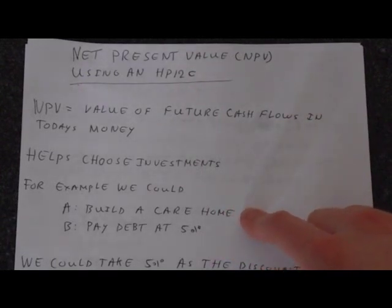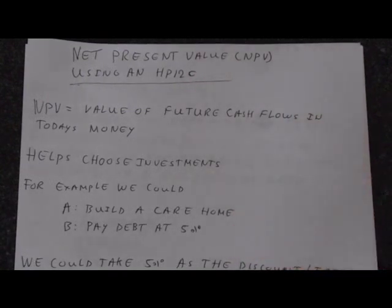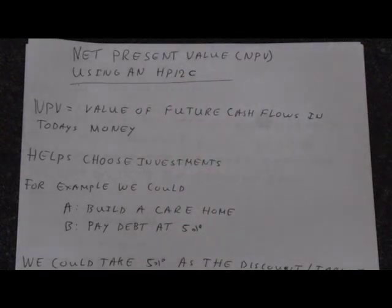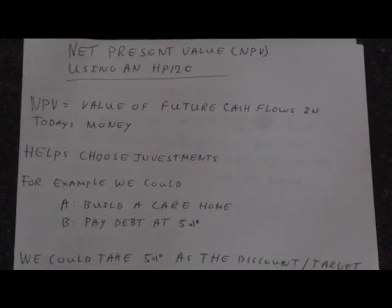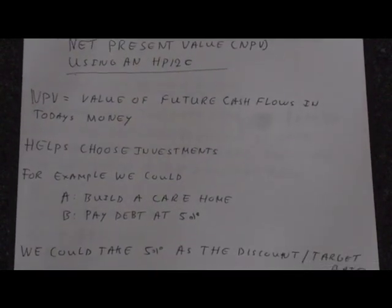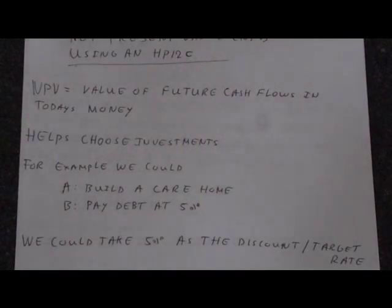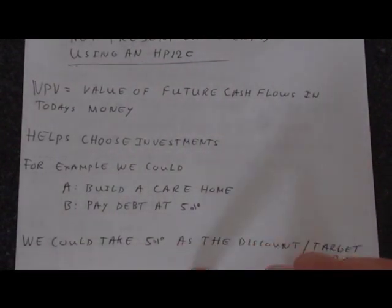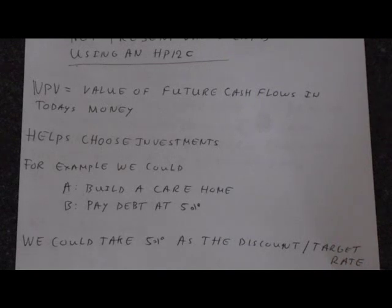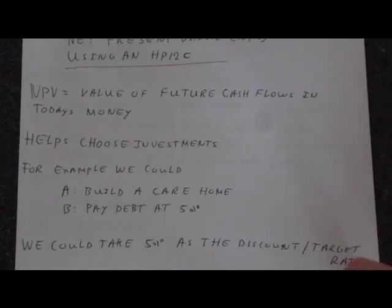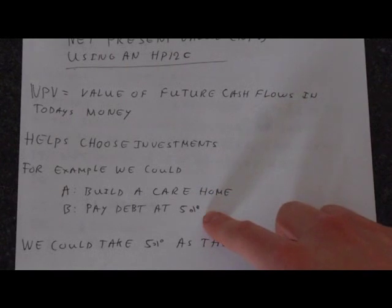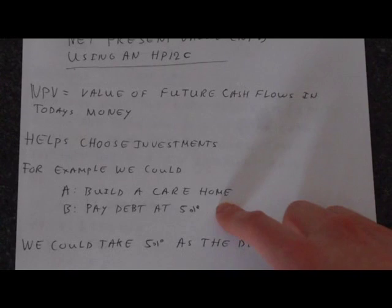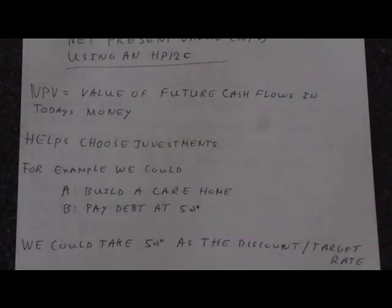If building more care homes is going to make you a lot more money than paying down the debt, then you'd want to build the care home and leave the debt as long as you can if you're earning very high returns. Care homes have typically provided very good returns for those who have invested in them. We could take 5% as what we call the discount rate or our target rate, so that's what the net present value calculation will be based on. Because it's like this is the alternative. You could get this return, so if you do something that gets less than this return, the thing that you're doing is pointless from a financial standpoint.